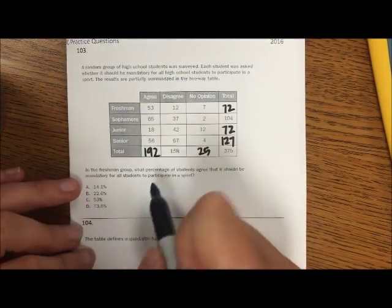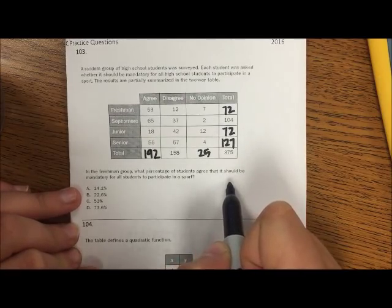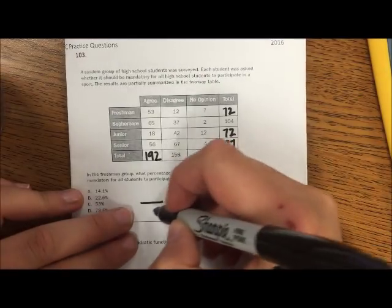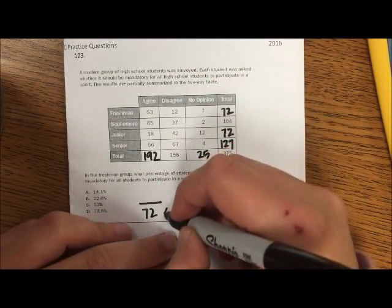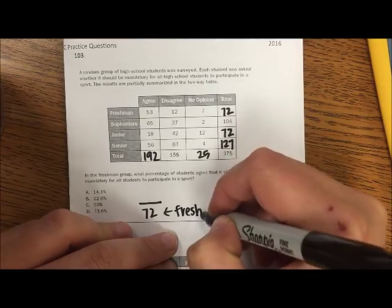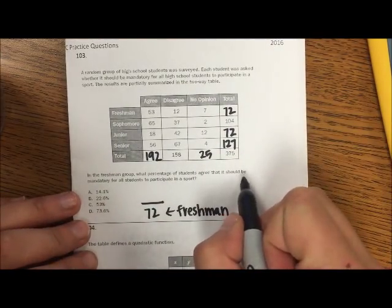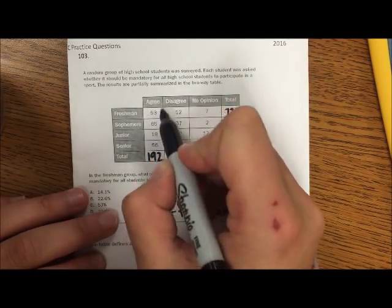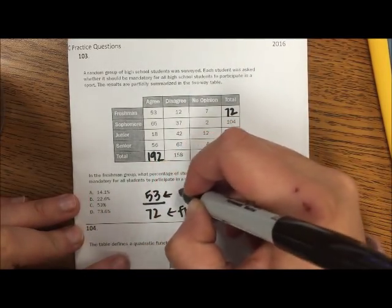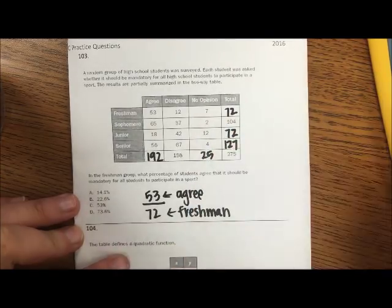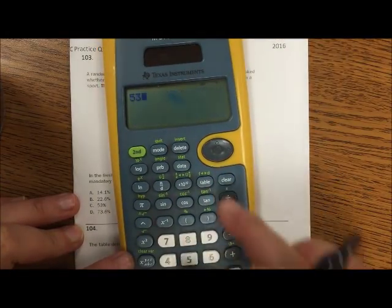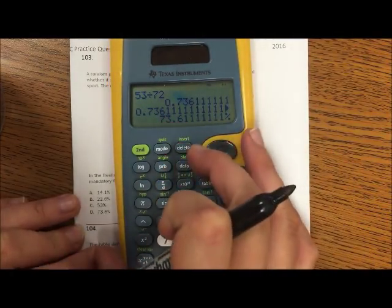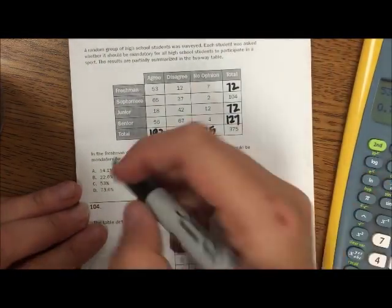In the freshman group, what percentage of students agree that it should be mandatory for all students to participate in the sport? So my condition is that you're freshmen, so I have 72 freshmen. And out of those freshmen, we're talking about students that say that it should be, so they agree to the question. And so I'm going to do 53 divided by 72 and then convert that to a percent. So that would be 73.6 percent, which would be D.